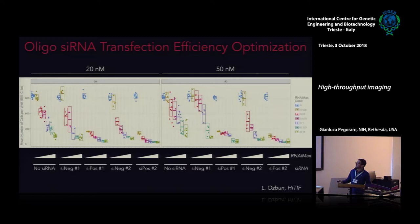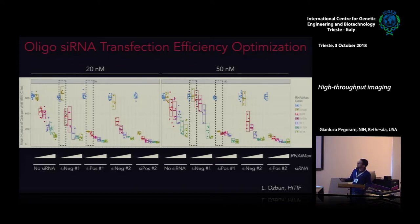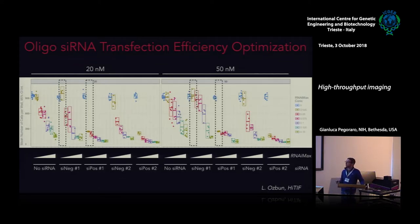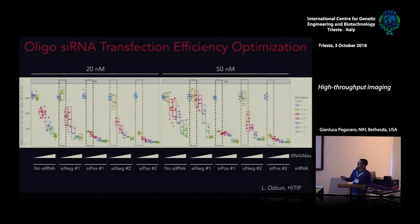At the appropriate concentration of transfection reagent, the negative control has no effect compared to the no-siRNA condition. At higher concentrations we observe toxicity, indicating the effect is completely sequence-specific. This shows the same results with two different siRNAs.